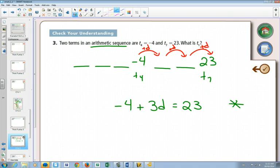But you have your algebra skills all the way through. We could add four to both sides, and then you get 3d is 27. So divide by three, and we know that the common difference is nine. We know that we're adding nine every single time.